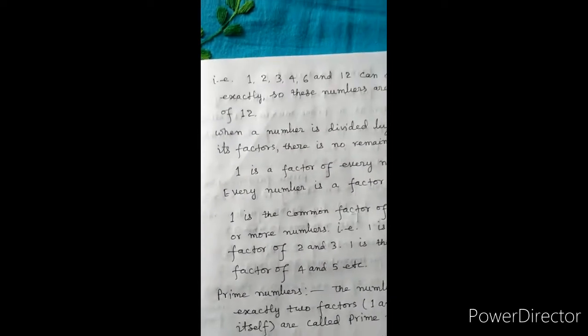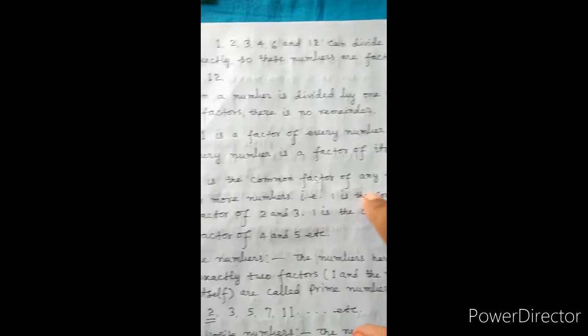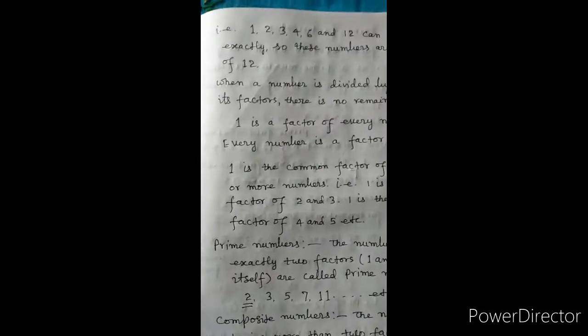Factors: the numbers which can divide a given number exactly without any remainder are called factors of that number. For example, 1, 2, 3, 4, 6, and 12 can divide 12 exactly, so these numbers are factors of 12. When a number is divided by one of its factors, there is no remainder. 1 is a factor of every number, and every number is a factor of itself. 1 is the common factor of any 2 or more numbers.